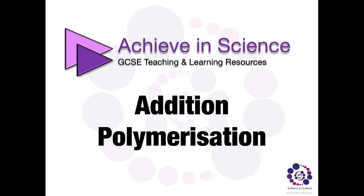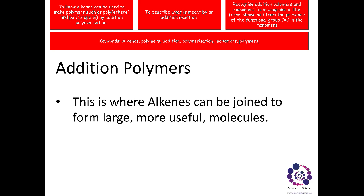Welcome to an Achieving Science video. This video is all about addition polymerization. An addition polymer is where alkenes have been joined together to form a long, more useful molecule. Let's have a look at an example of this reaction.